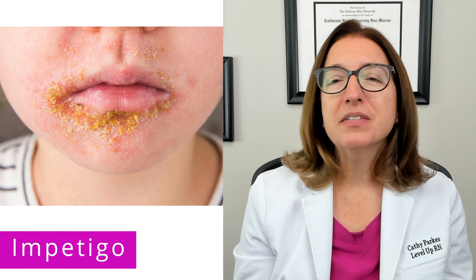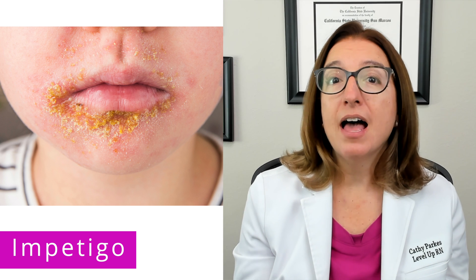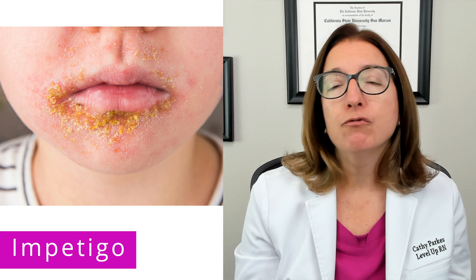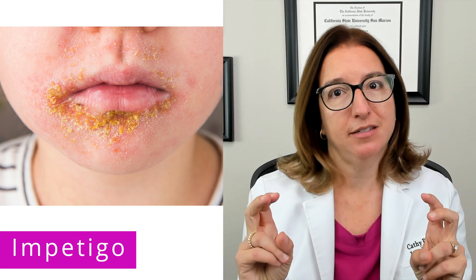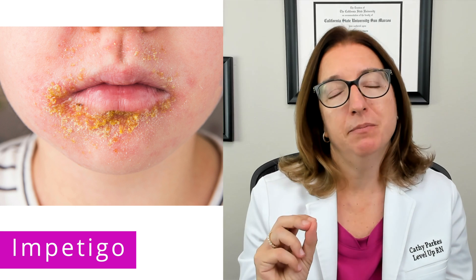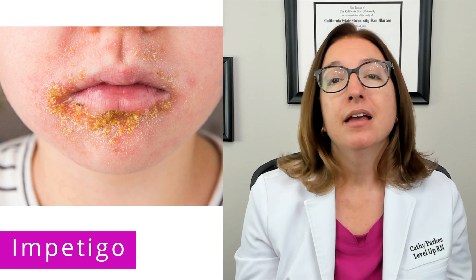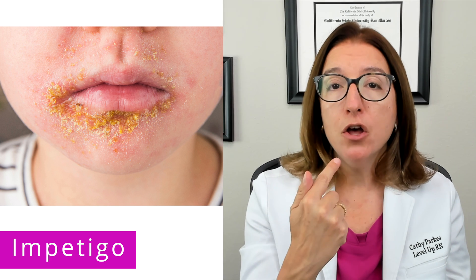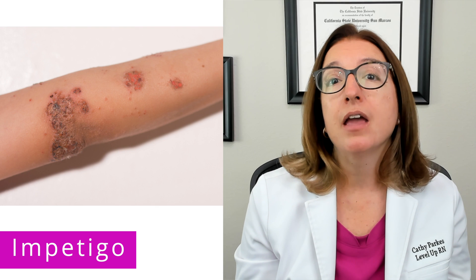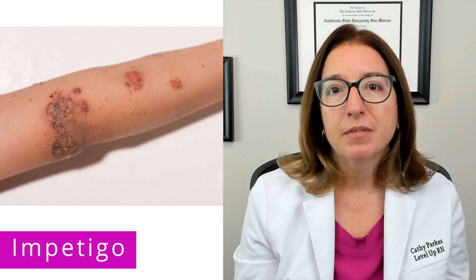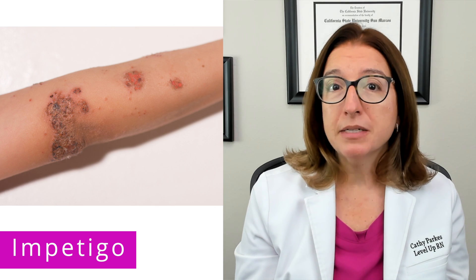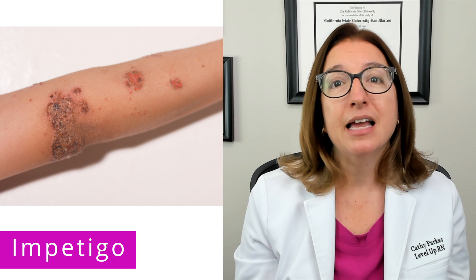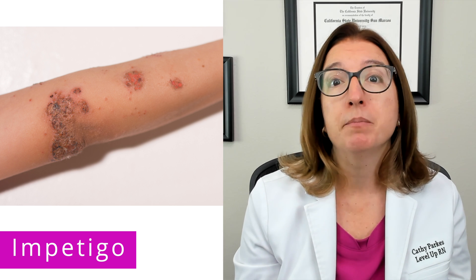In terms of signs and symptoms, impetigo will start off as vesicles or pustules that then rupture and form a honey-colored crust, which is a hallmark symptom of impetigo. Impetigo frequently affects the skin around the mouth and nose, but may present on the arms and legs as well. The provider can typically diagnose impetigo by just looking at the sores, but in some cases a culture of a lesion may be obtained.